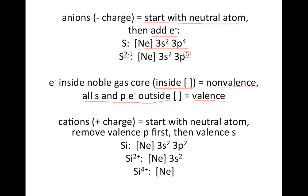So if we want to now do cations which have a positive charge, you're going to do the same thing you did before. Start with the neutral atom and then start removing as many electrons as necessary in this order. First, you're going to remove the valence P electrons, and then if you need to remove more than that, then you would start removing the valence S.